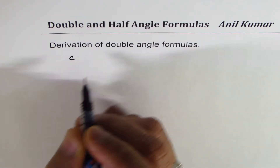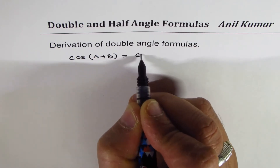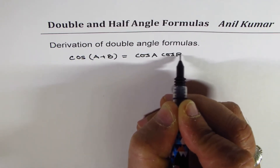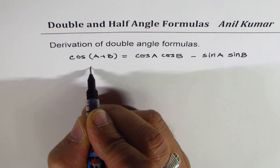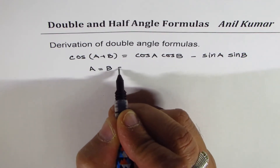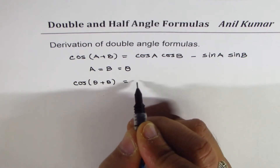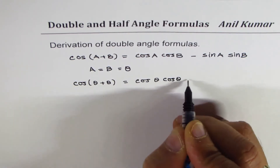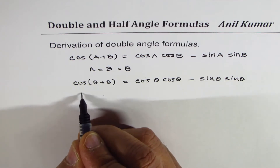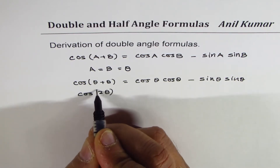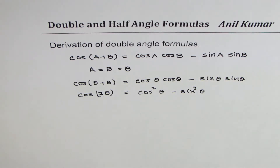Most of you know this — you can skip this part if you do. We'll start from the very basic: cos(a + b) equals cos a cos b minus sin a sin b. If I write a equals b, both equal to theta, then I get cos(theta + theta) equals cos theta cos theta minus sin theta sin theta. So this gives cos 2 theta equals cos squared theta minus sin squared theta.